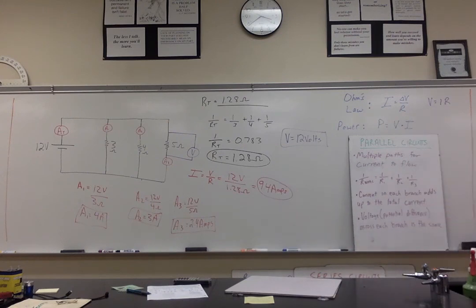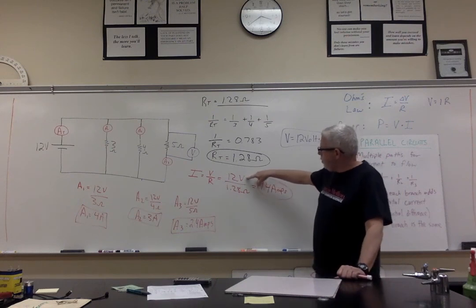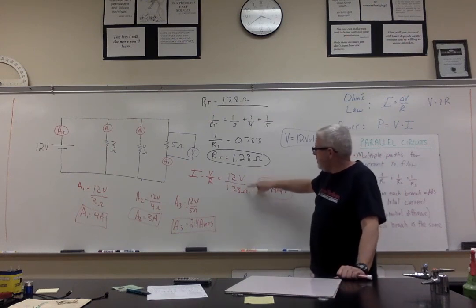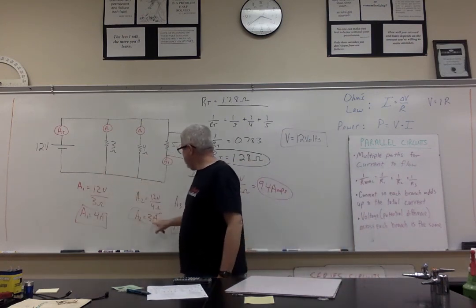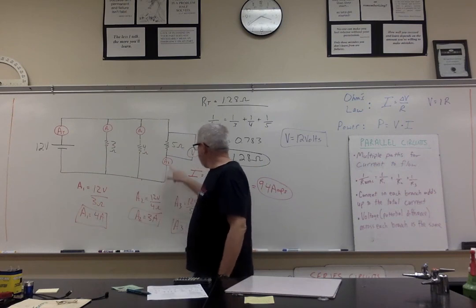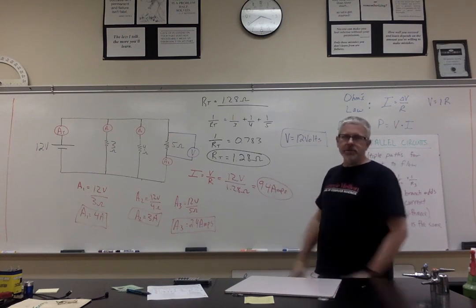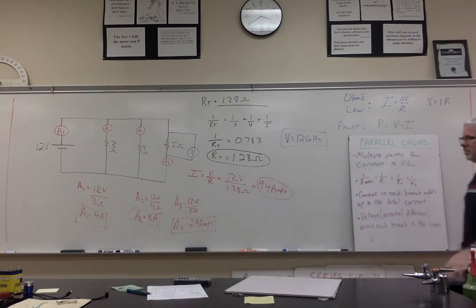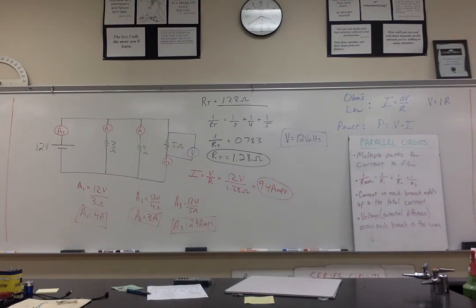This gets back to what I mentioned earlier: the current through each branch in a parallel circuit should add up to the total current. Let's check — I had 9.4 amps when I took total voltage divided by total resistance. Here, the current through the branches: 4 amps plus 3 amps is 7, plus 2.4 amps gives me 9.4 amps. Same answer! That's a really nice way to double-check things. Hopefully this helps you understand parallel circuits, and I'll give supplemental information from the physics classroom.